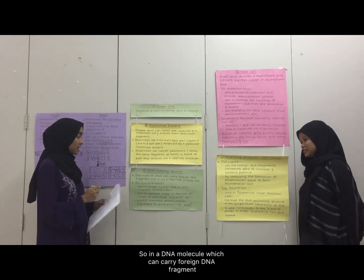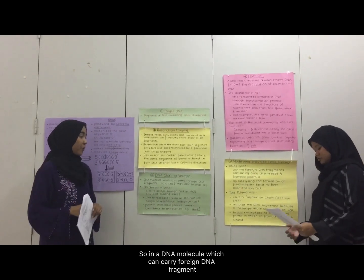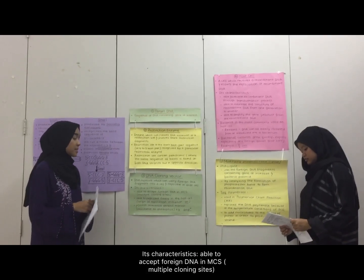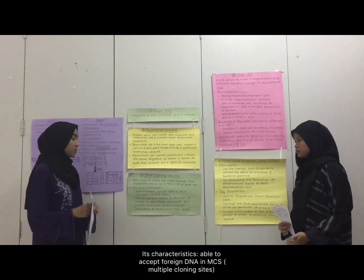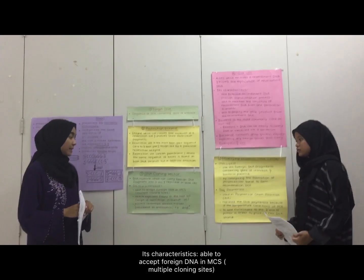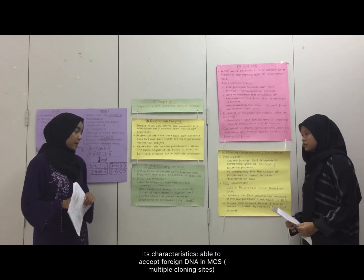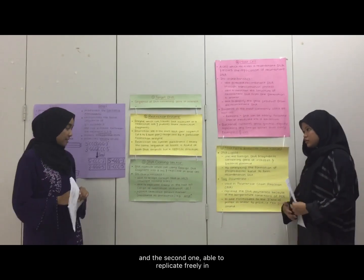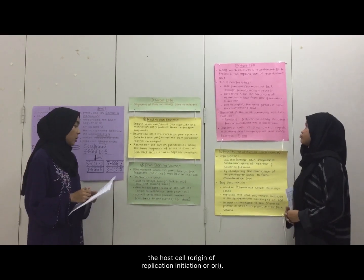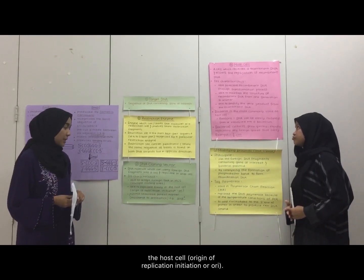The third tool is DNA cloning vector. A DNA cloning vector is a plasmid — a DNA molecule which can carry foreign DNA fragments into a cell and replicate in that cell. Its characteristics: able to accept foreign DNA in multiple cloning sites (MCS); able to replicate freely in the host cell, known as origin of replication (ORI).